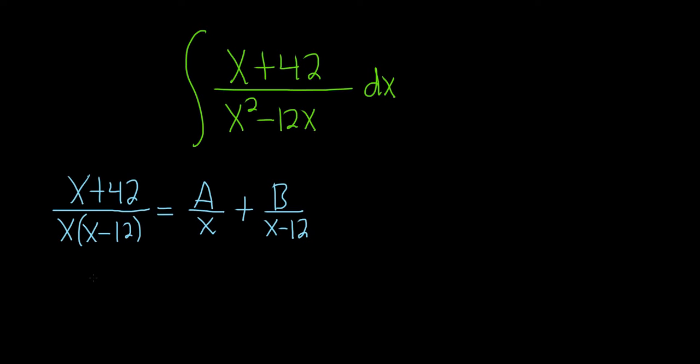The cover-up method says to find A, you look at what's under your A. In this case, it's x. Then you ask yourself, what can you plug in to make this 0? In this case, 0.